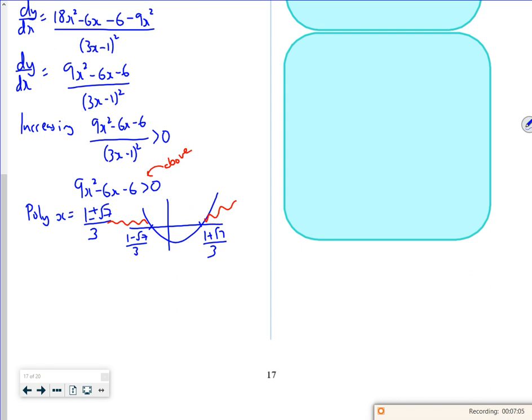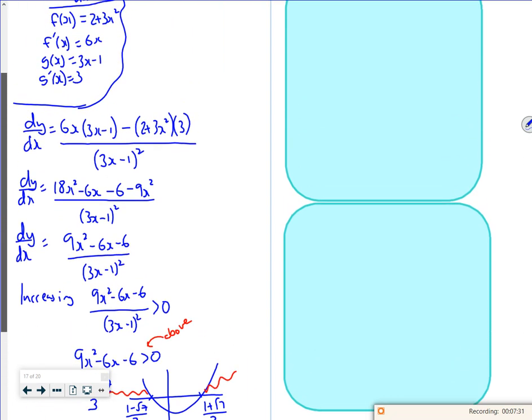So I've got, in terms of an answer, x is less than 1 minus root 7 over 3, or x is greater than 1 plus root 7 over 3. And I'll wrap that around with set notation. There you go, that's not too bad, is it? Easy for me to say.